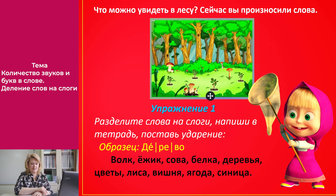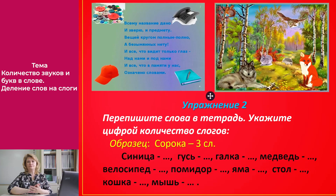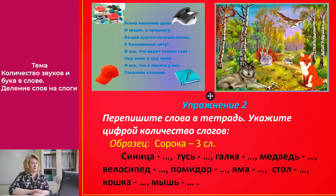Вы справились с заданием. Молодцы! Всему название дано — и зверю, и предмету. Вещей кругом полным-полно, а безыменных нету. И всё, что видит только глаз, над нами и под нами, и всё, что в памяти у нас, означено словами. Переходим к упражнению номер два. Перепишите слова в тетрадь и укажите цифрой количество слогов. Посмотрите образец: слово «сорока» — три слога.